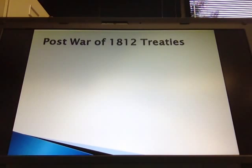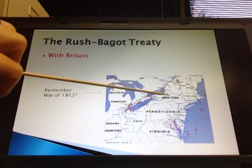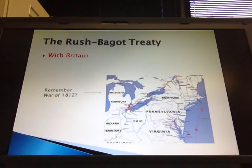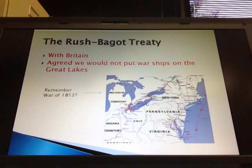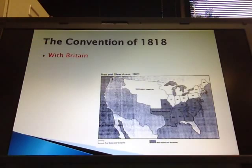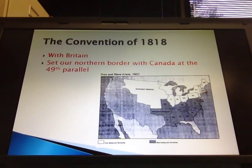We also had treaties after the War of 1812 that demonstrate we wanted to be respected. The Rush-Bagot Treaty with Britain said we would not put warships on the Great Lakes, showing that the British were intimidated enough by us that we were a force to be reckoned with — raising our sense of pride and nationalism. The Convention of 1818 with Britain set our northern border with Canada at the 49th parallel, clarifying where our land ended and giving us a stronger sense of identity.